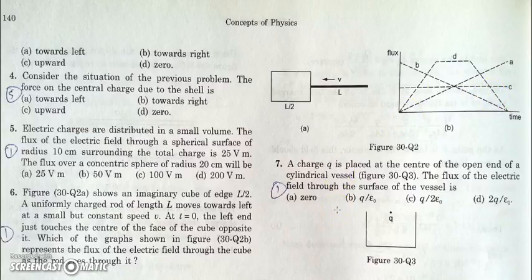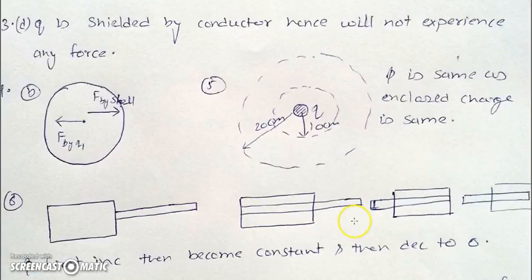In the next question, it is asked how much flux will pass through this vessel if charge Q is placed like this. As the charge Q is just at the periphery or just at the open face of this vessel, half of the field lines will enter through the vessel and half will not. Have a look at the diagram.